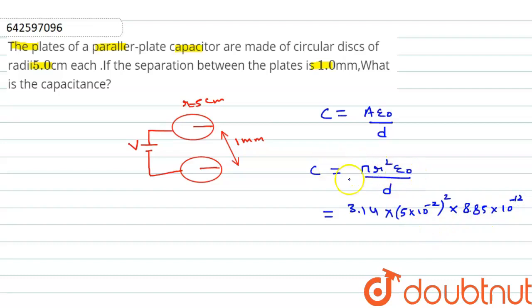This is the value of epsilon naught, divided by 1 mm, which is 1 times 10 to the power minus 3.